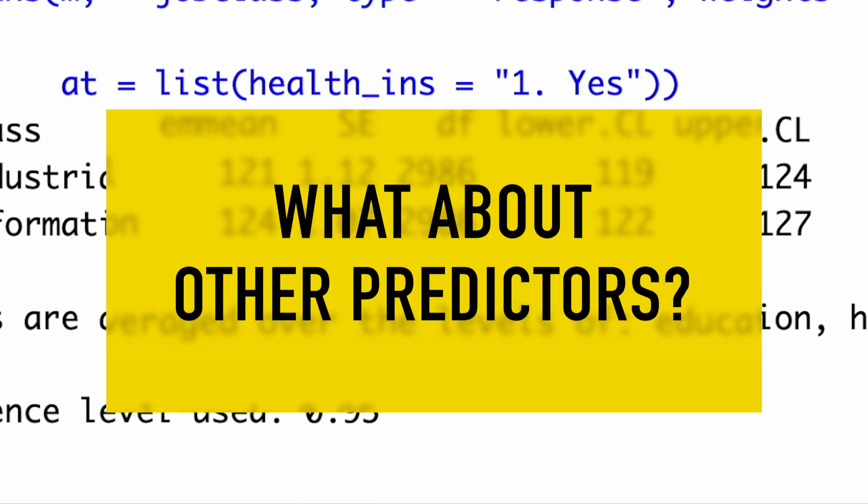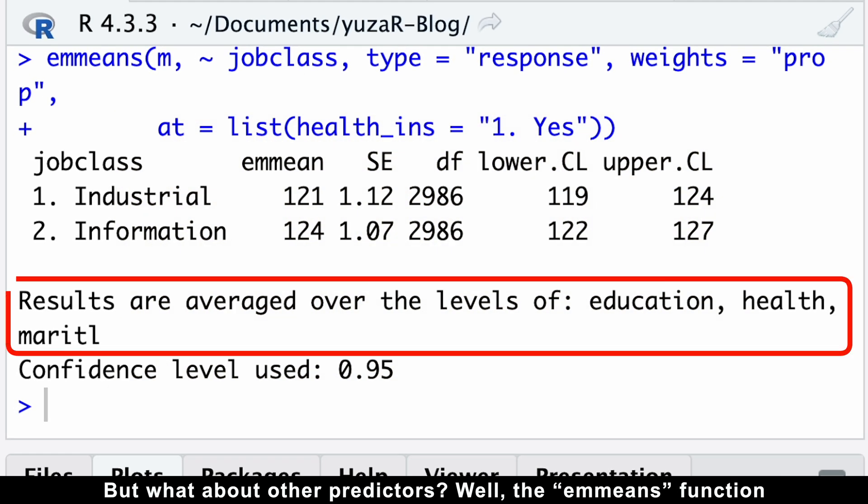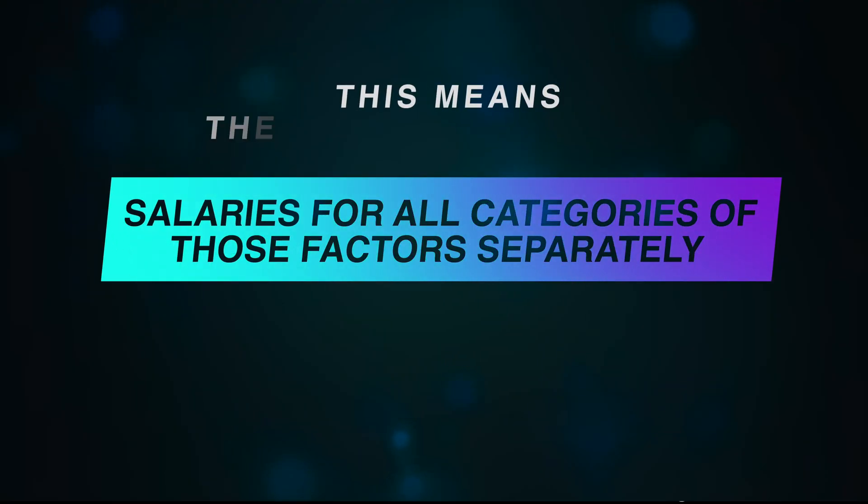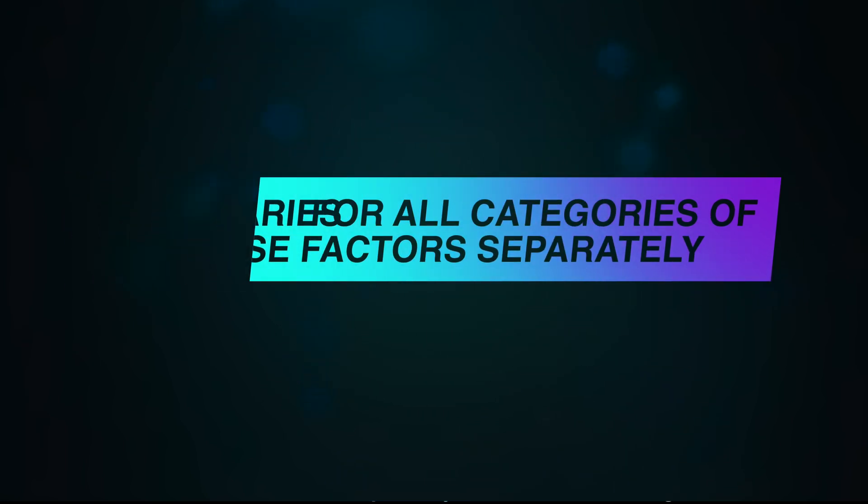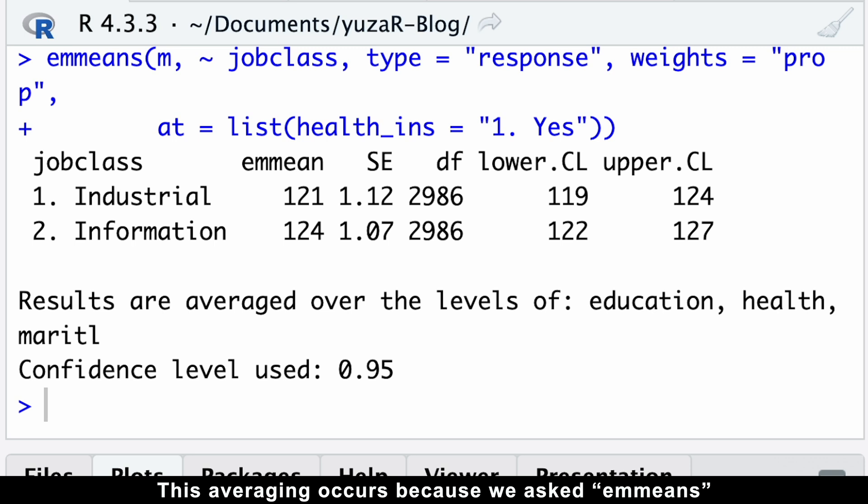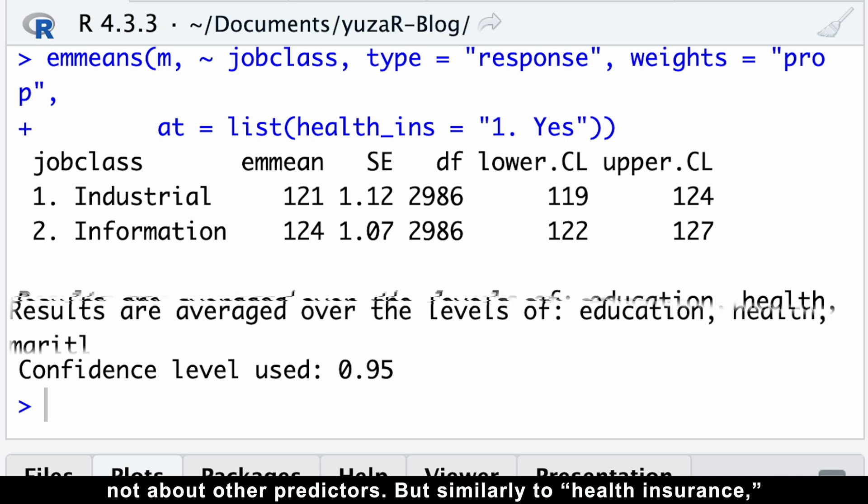But what about other predictors? The emmeans function tells us that the results are averaged over the levels of education, health, and marital status. This means the model calculates salaries for all categories of those factors separately and takes an average. This averaging occurs because we asked emmeans only about job classes and health insurances, not about other predictors.